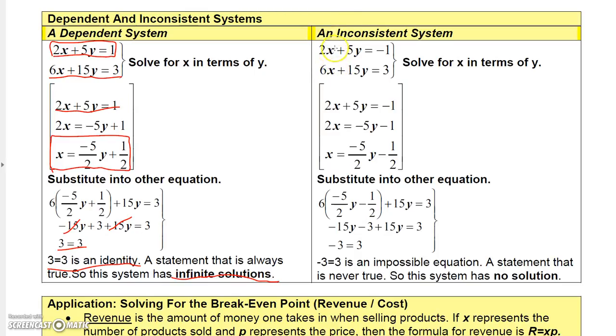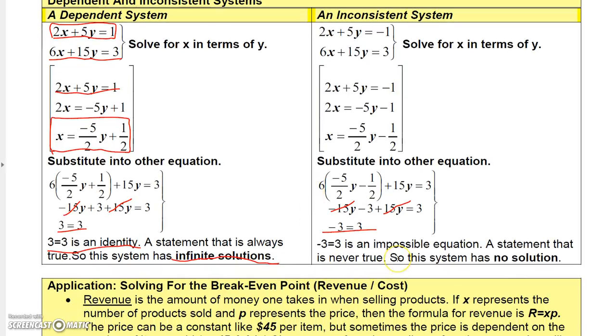Now, if I change the problem just a little bit, notice all I did was change this sign here. Then, when I solve for x in terms of y, I get minus 5 halves y minus a half instead of plus a half. So when I plug that in to the second equation, and distribute the 6, I get minus 15y minus 3 plus 15y. Well, the y's still cancel, but this time I get minus 3 equals 3. And this is what we call an impossible equation or a contradiction. And when you get an equation like that, that's a statement that can never be true. Therefore, this system has no solution. And so this would be an inconsistent system.